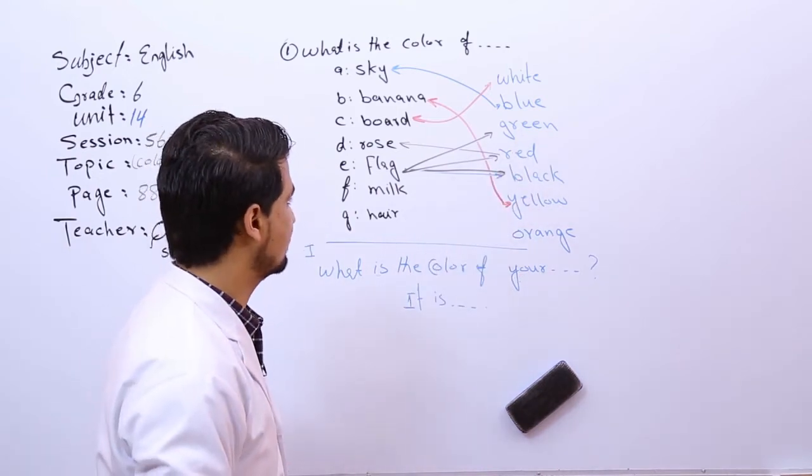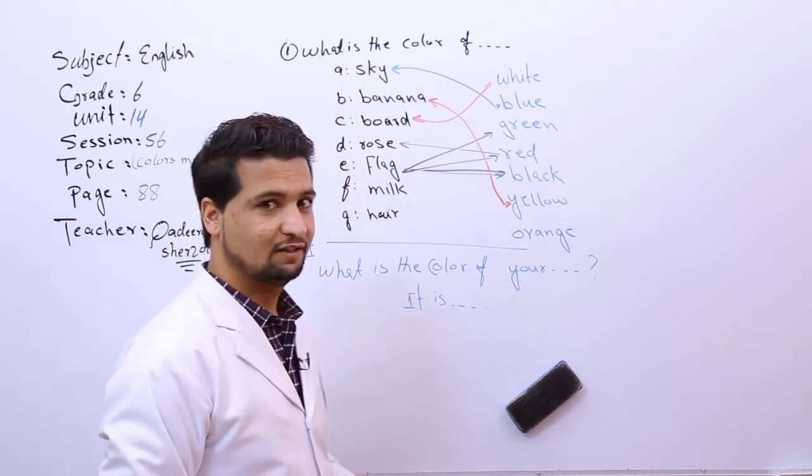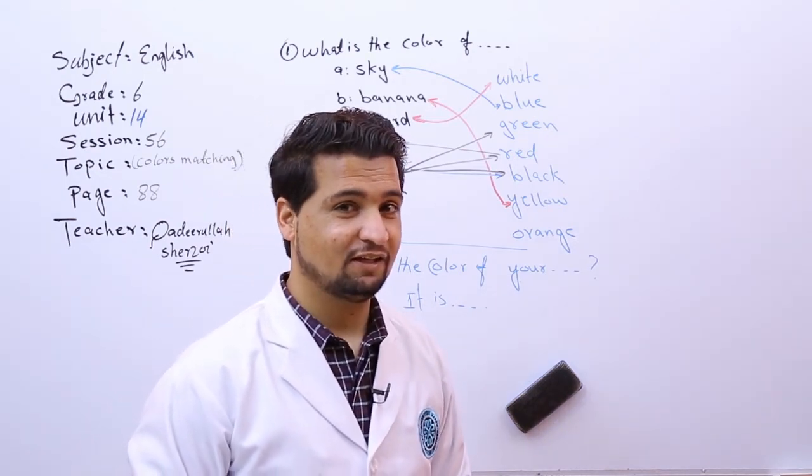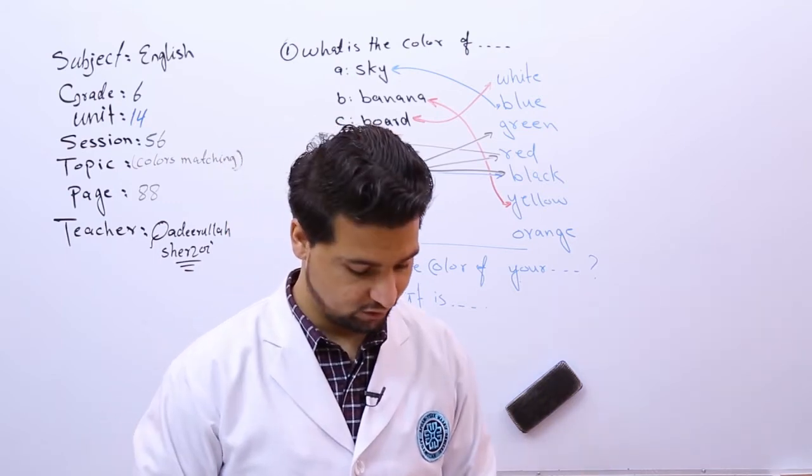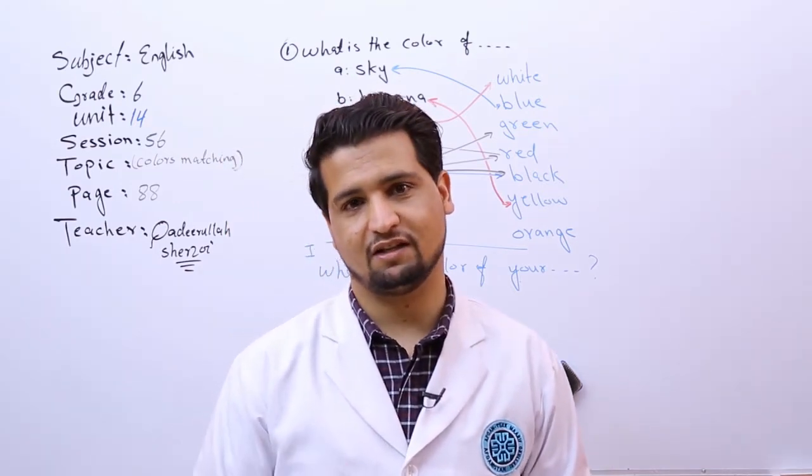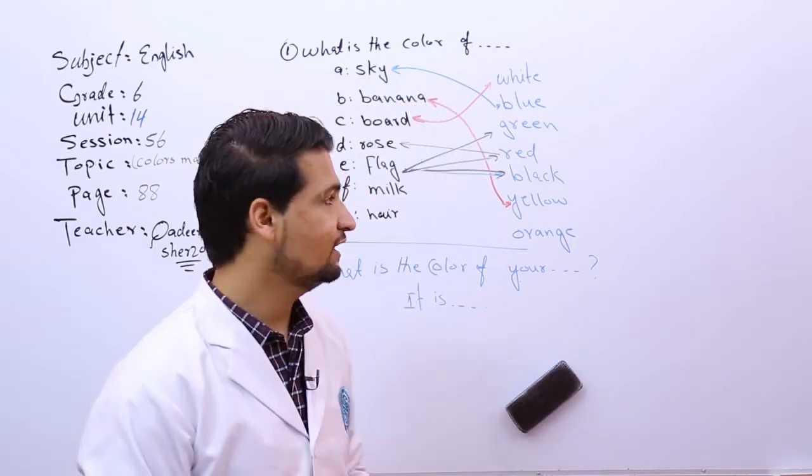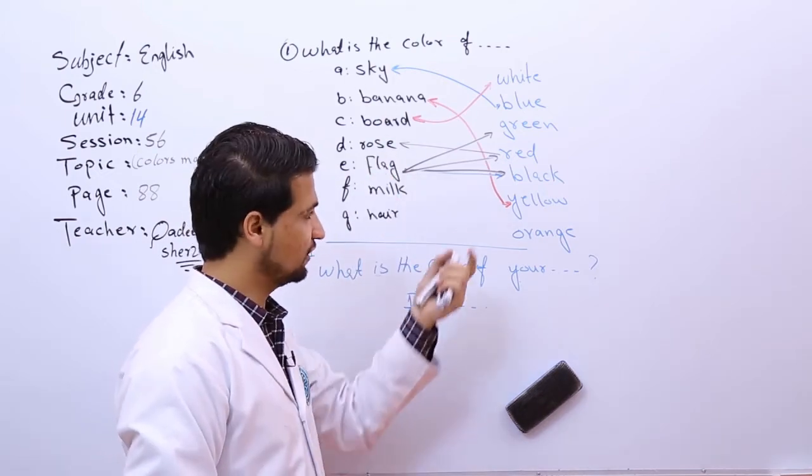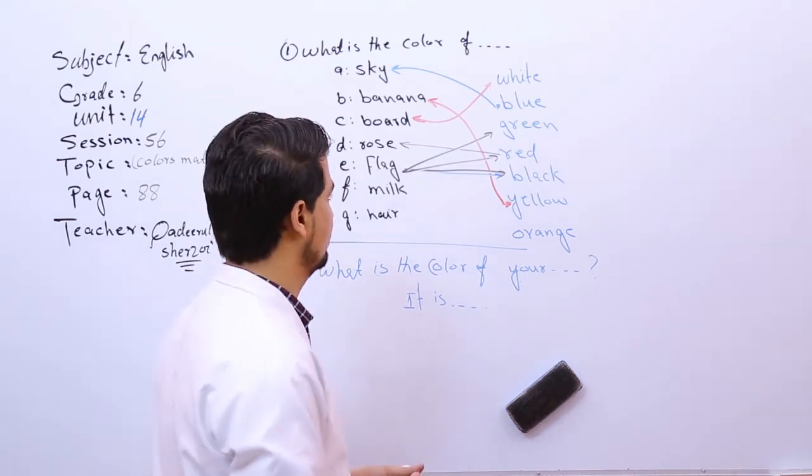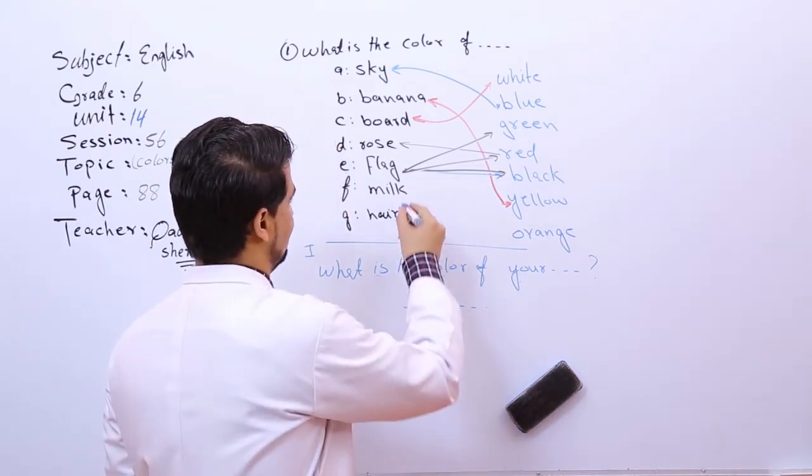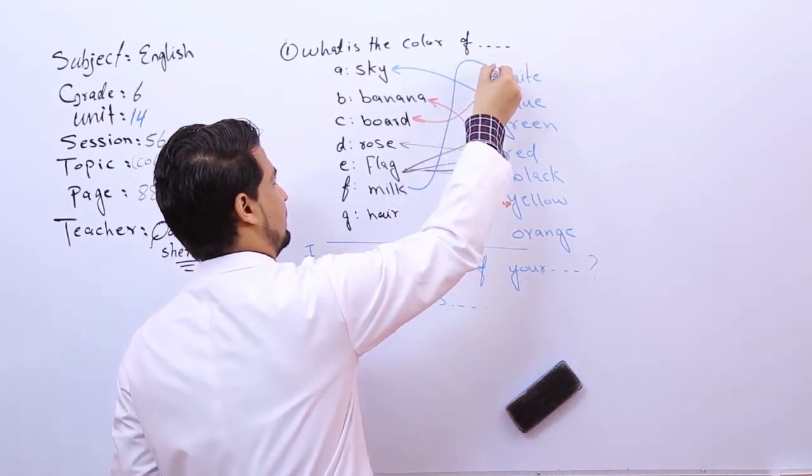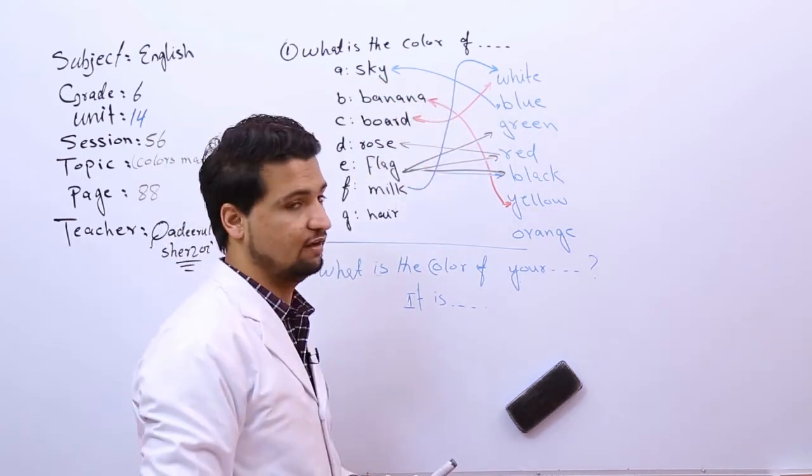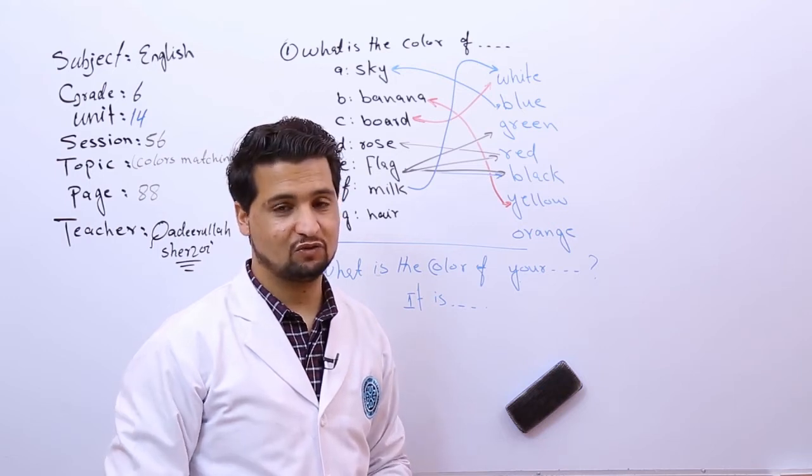Milk. What is the color of milk? What is the color of milk? The color of milk is orange, clear? No, it's wrong. So we have to say that it is white. It is what? It is white. What is the color of milk? So we say it is white.